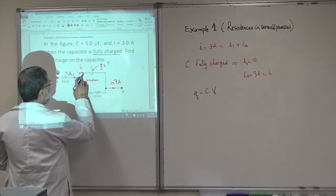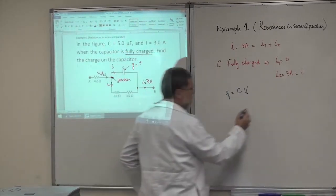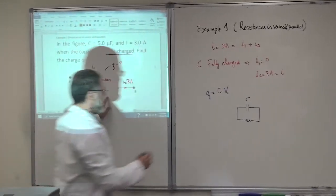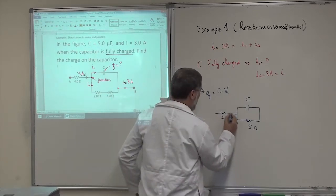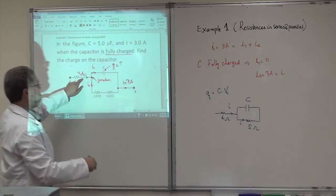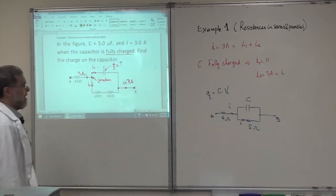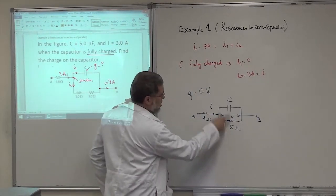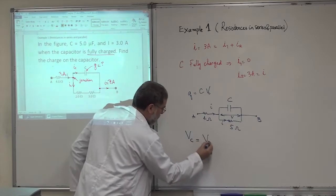The capacitance is 5 microfarads times the voltage across the capacitor — the voltage between these two points. That voltage is exactly equal to the voltage across the resistance in parallel with the capacitor. I'm going to redraw the figure: the capacitance here, the two resistors combined as 5 ohms in series, and the 4-ohm resistor. This is point A and point B.